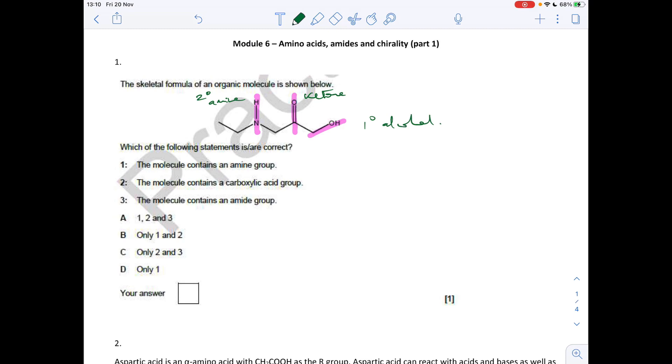We've got this group here, which is a primary alcohol. So which of those statements is correct? The molecule contains an amine group - yes it does. The molecule contains a carboxylic acid group - no it doesn't. The molecule contains an amide group - no it doesn't. So only one is correct. The answer was D.